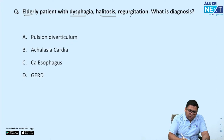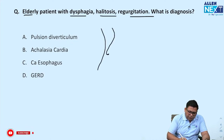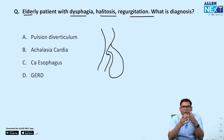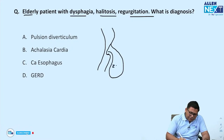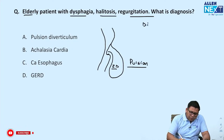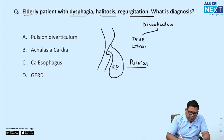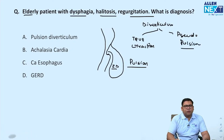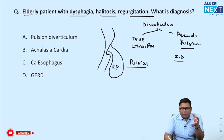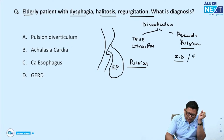Elderly patient with dysphagia, halitosis, and regurgitation. You need to understand that around Killian's dehiscence — Killian's triangle — there is a dehiscence known as Zenker's diverticulum. It is a pulsion diverticulum. There are two types of diverticulum: the true one is known as traction, and the pseudo one is known as pulsion. The two pseudo pulsion defects in the esophagus are Zenker's diverticulum (also known as cricopharyngeal achalasia) and epiphrenic diverticulum.